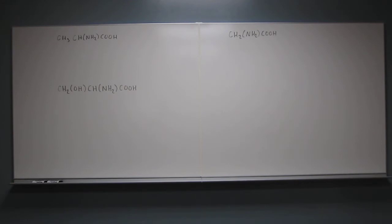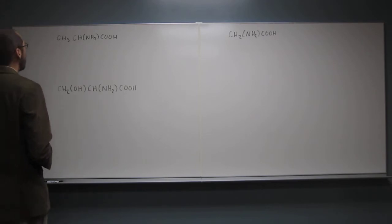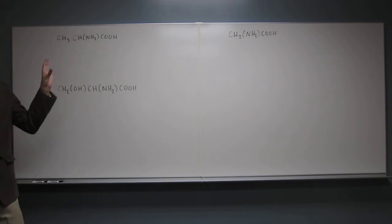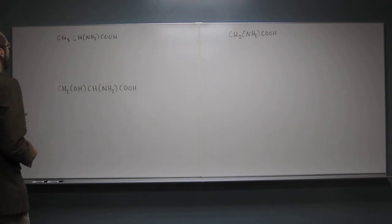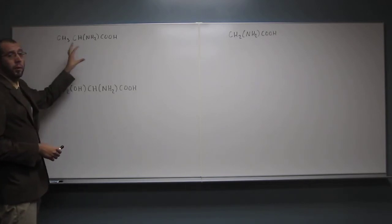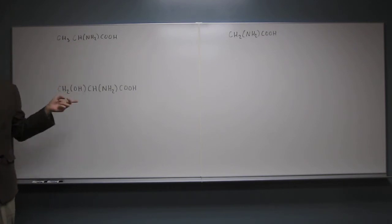Okay, so remember what chiral means. That means to rotate plane polarized light. And when we're looking at structures, what we're going to do to figure out if a molecule is chiral, we're going to be looking for a carbon atom that has four different groups attached to it. So if those groups are different in any way, then we'll say yes, they are different.